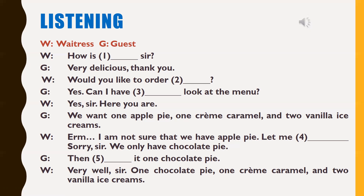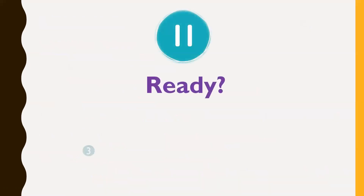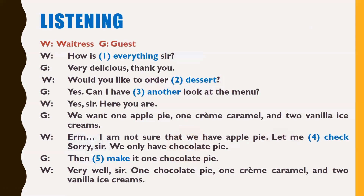Okay, so you got the answer. We will check it right here. Number one: fill in the word 'everything' — how is everything, sir. Number two: 'dessert' — would you like to order dessert. Number three: 'another' — can I have another look at the menu. Number four: 'check' — let me check. And number five: 'make' — then make it one chocolate pie. Okay, so you got all of them correct. Now let's look at some key expressions.